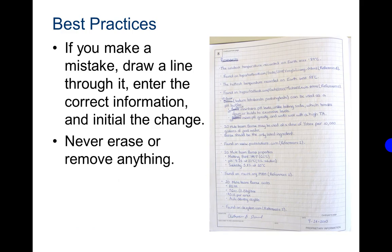If you make a mistake, draw a line through it. Never scribble through it. You need to still be able to read what the mistake was. Then enter the correct information after you've drawn a line through it and initial the change. Never erase or remove anything.